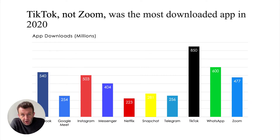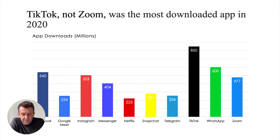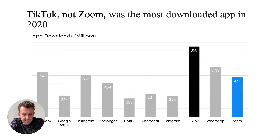Now we've got a lot of colors on this chart, which were initially used to match the brand colors of each of the apps. But we don't need those — they're not contributing to the data or to the story. So let's get rid of all of those and just focus on the two apps that the headline is describing.